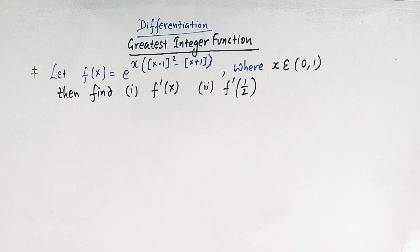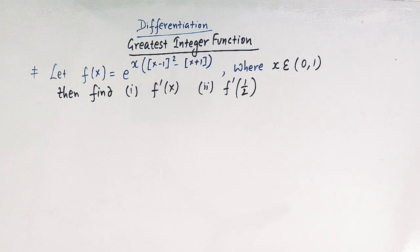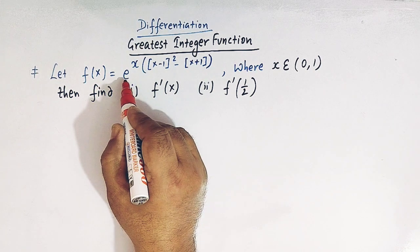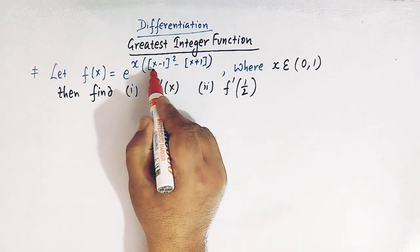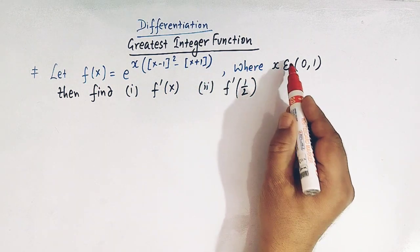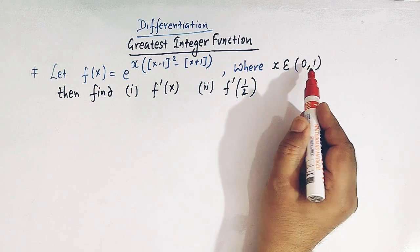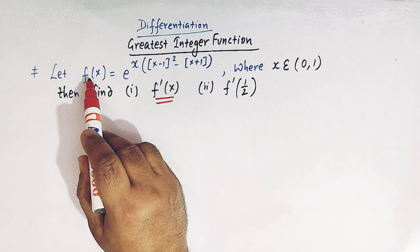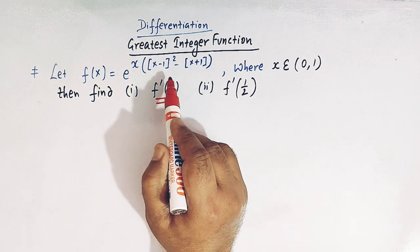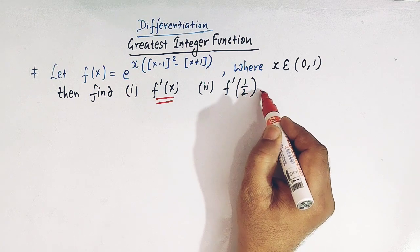Hello viewers. In today's class we are going to discuss yet another important and very conceptual problem from differentiation. We have to find the derivative of the function f of x, which is equal to e raised to x times the square of greatest integer of x minus 1, minus greatest integer of x plus 1, where x belongs to the interval 0 comma 1. We have to find the derivative f prime of x and then the particular value of the derivative at x equal to half.